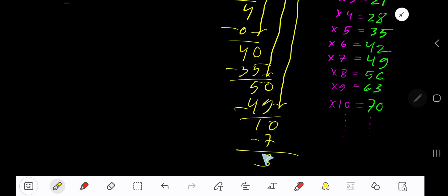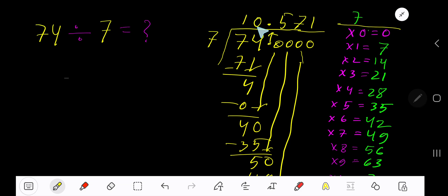Subtract to get 3. This process continues, so our answer is 10.571. You can place three dots here, so our answer is 10.571...